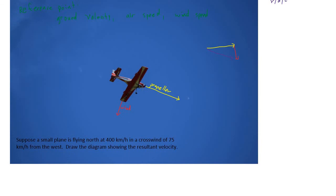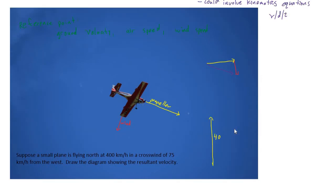Let's look at a simple example just for setting up these problems—not solving for the magnitude, just drawing the diagram. Suppose a small plane is flying north at 400 kilometers per hour in a crosswind of 75 kilometers per hour from the west. We start with the velocity from the propeller: a vector representing 400 km/h pointing north. Remember, the longer the arrow, the faster the speed.